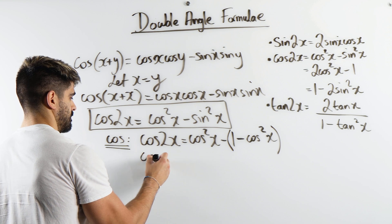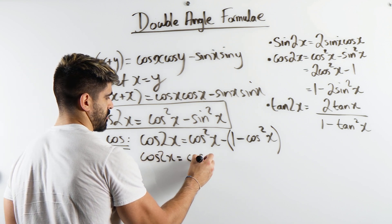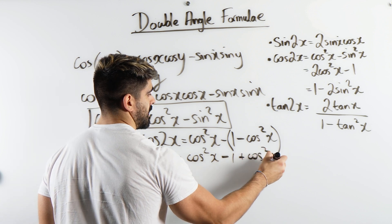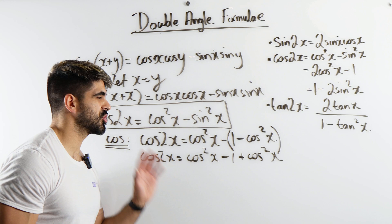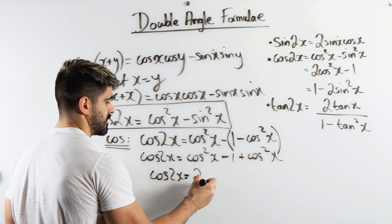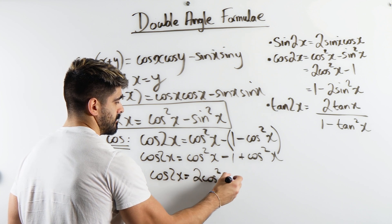Okay, so cos 2x is cos squared x minus 1 plus cos squared. And we will show that question, just show as much as possible. So we have cos 2x is 2 cos squared x minus 1.